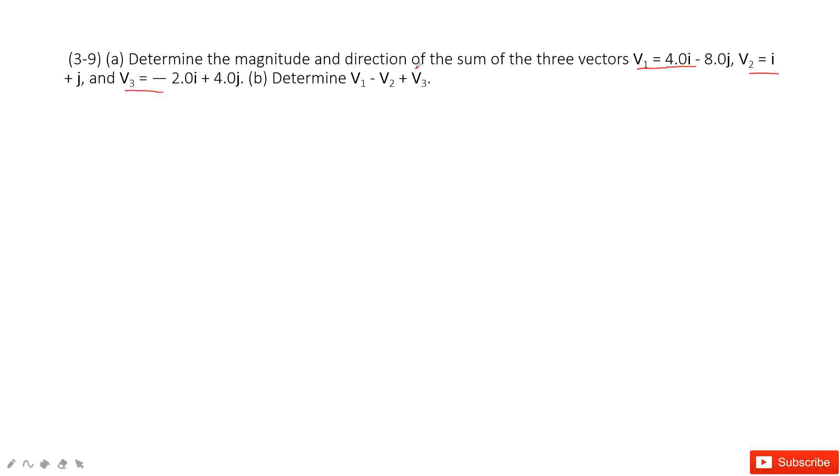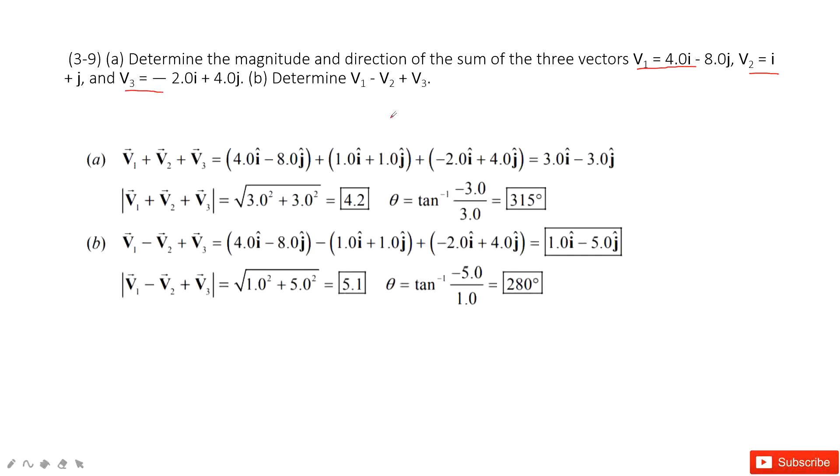So first, we need to find the sum of these three vectors. For vector addition, we just add the i component together and add the j component together, and then we get it.